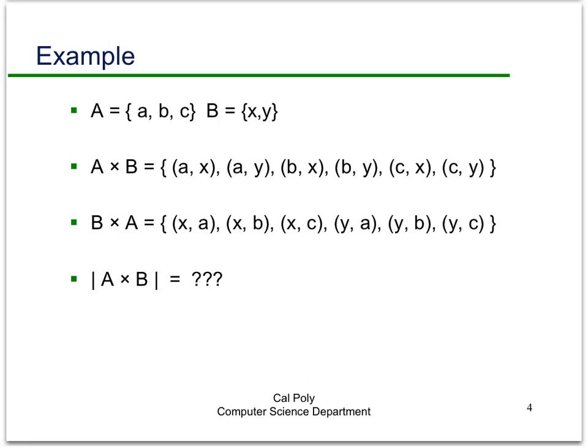Just to contrast, if we look at B cross A, now all the first elements are coming from B, but the second elements are coming from the set A. So, a question for you to think about real quick, what is the cardinality of A cross B in this particular situation? The cardinality of A was 3, the cardinality of B is 2, what's the cardinality of A cross B?